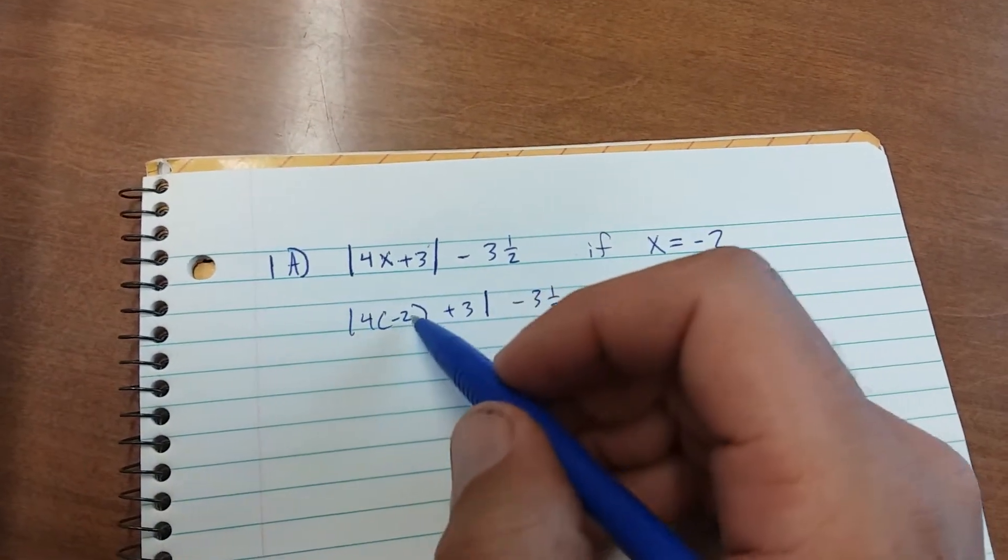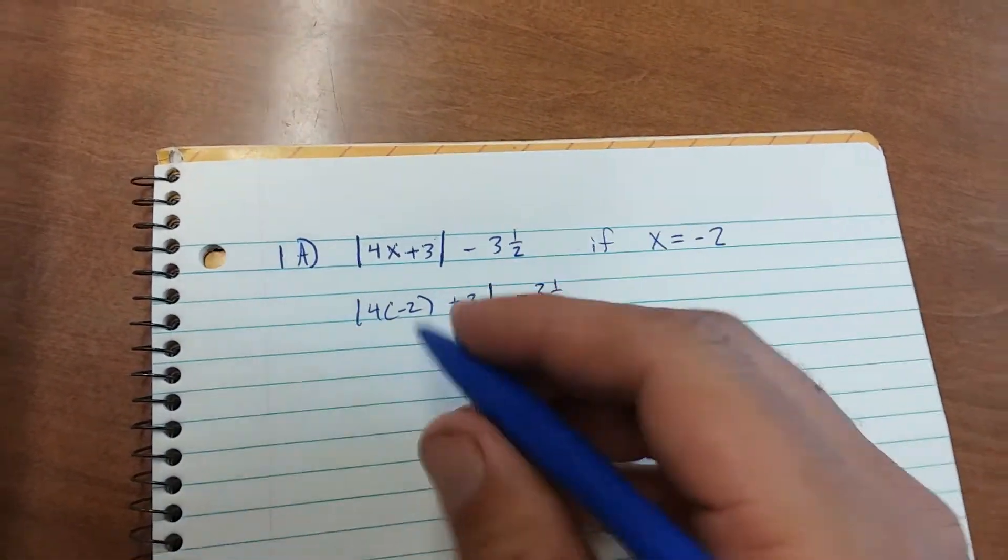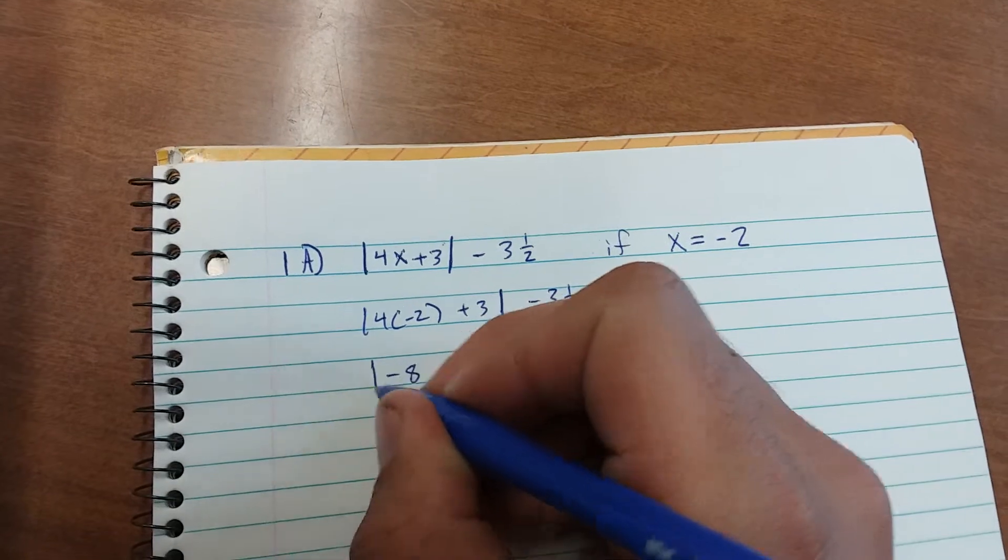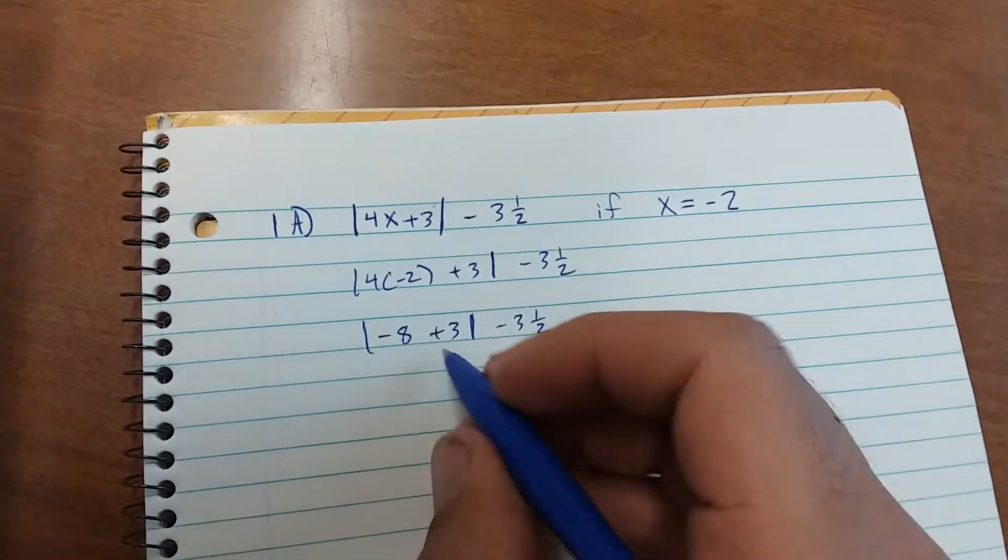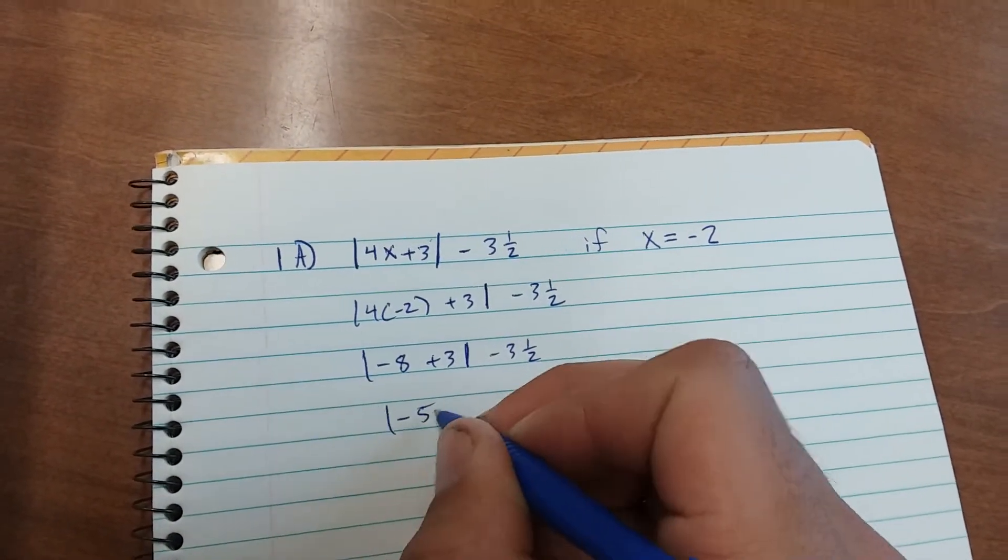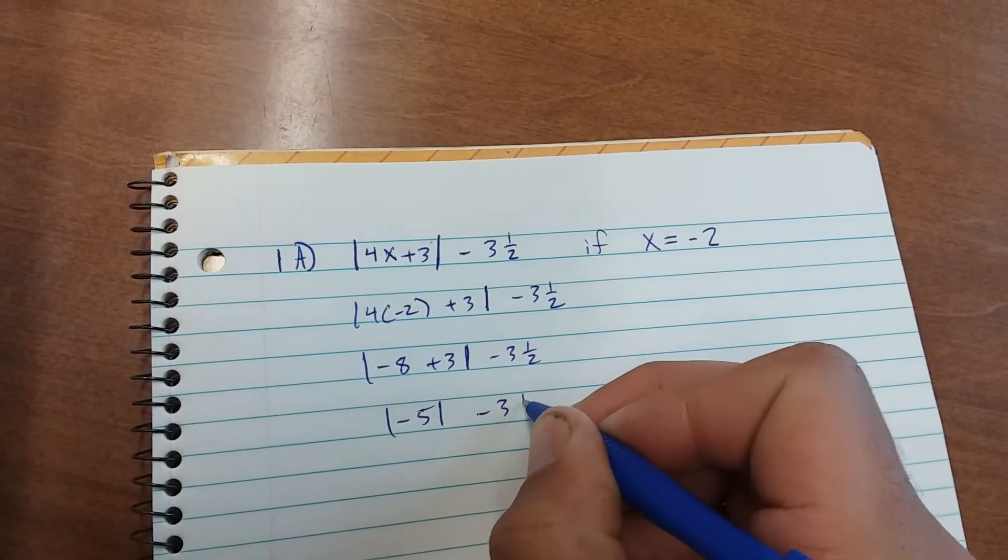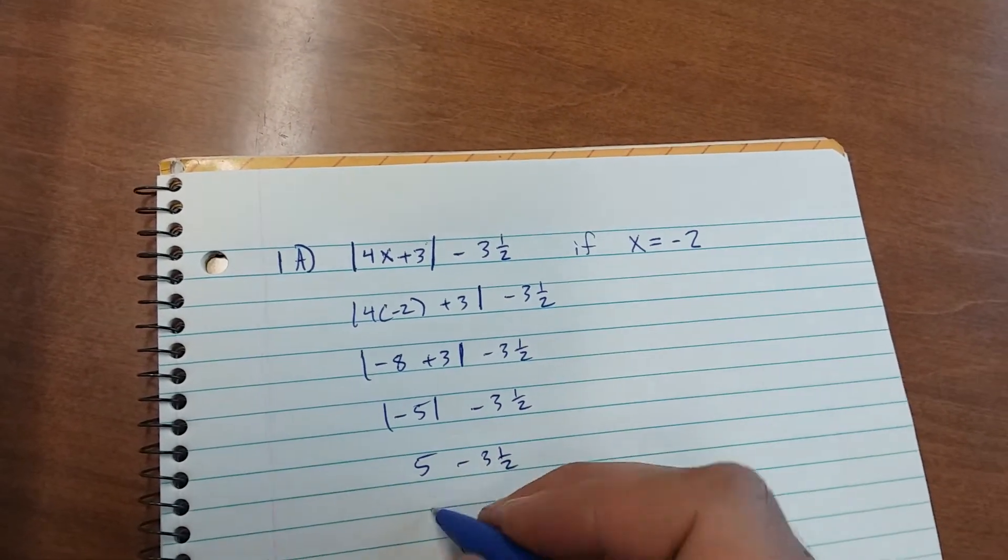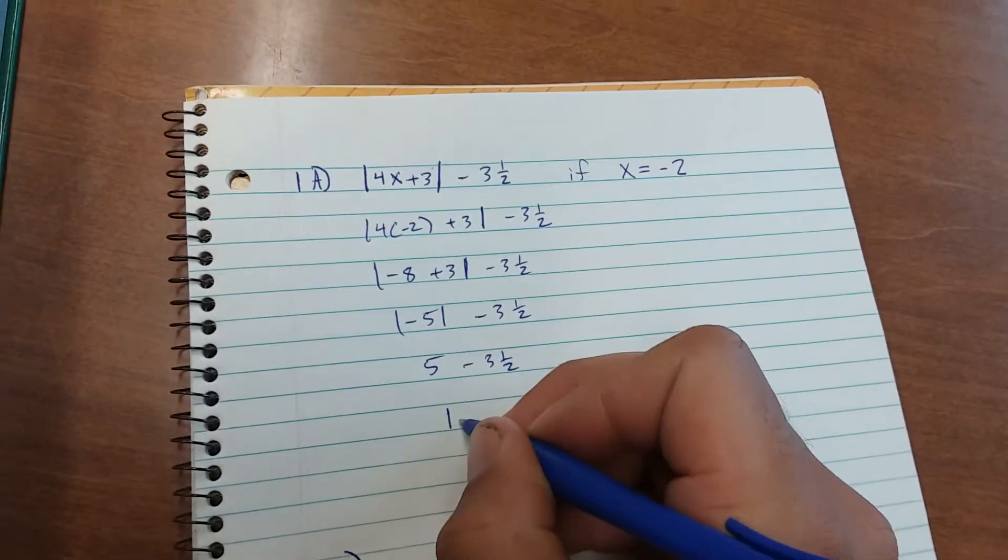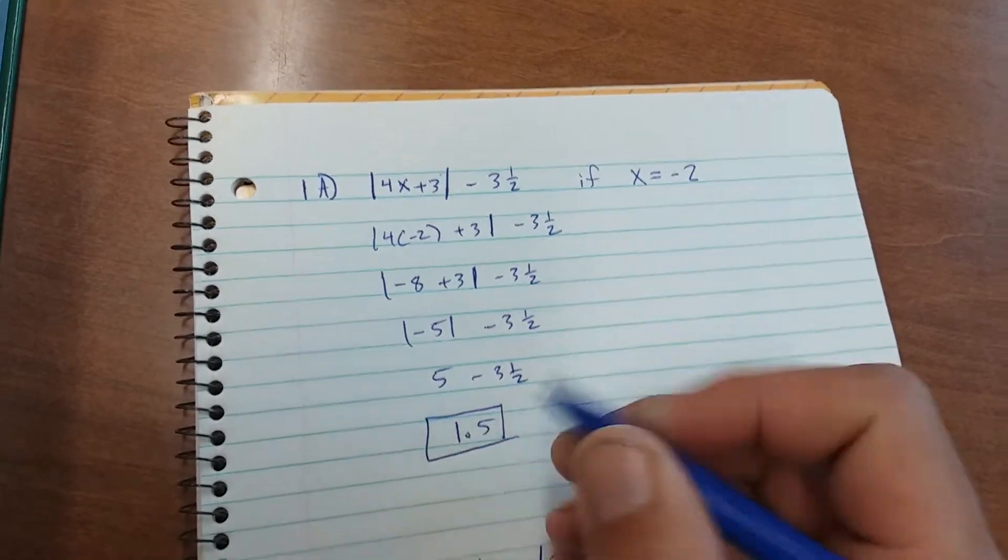You get negative 8 plus 3 minus 3.5. You get the absolute value of negative 5 minus 3.5. That comes out to 5 minus 3.5. That is 1.5.